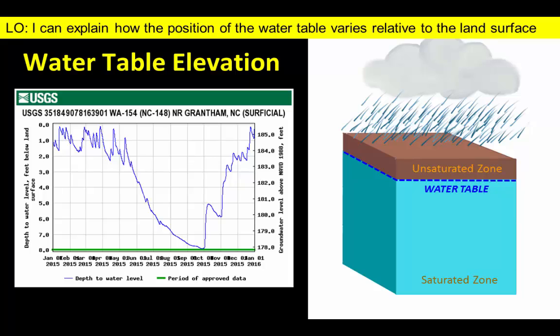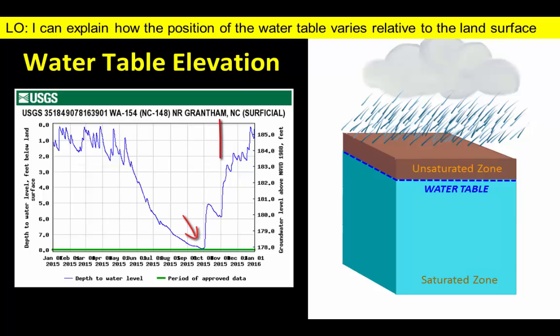This graph illustrates how groundwater levels change in a well in eastern North Carolina. Note that the water table is typically within a few feet of the surface, but it dropped to nearly eight feet during October before bouncing back due to winter precipitation.